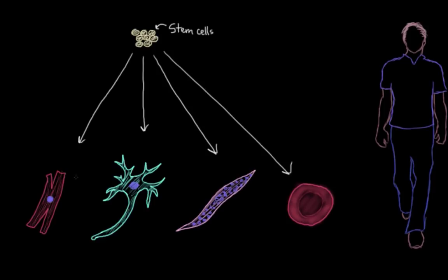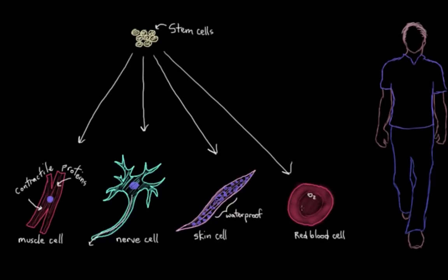So all of these really specialized cells like this muscle cell here, with its little contractile proteins, and this nerve cell here that can send signals, and this waterproof skin cell here, and this red blood cell that carries oxygen, all of these came from these stem cells up here which were completely unspecialized.